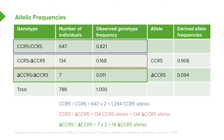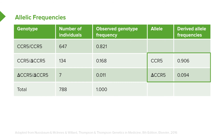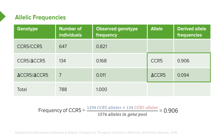In order to get the total frequency of each allele, we add up how many CCR5 wild-type alleles there are in both the homozygous and heterozygous forms. The frequency of CCR5 is the number of CCR5 alleles divided by the total number of alleles in the population. So we take our 1294 CCR5 alleles from the homozygous wild-type individuals, add the 134 from the heterozygous form, divide by the total number of alleles in the population, and we end up with a frequency of 0.906, as shown in the table.